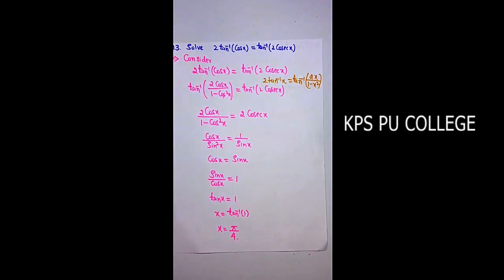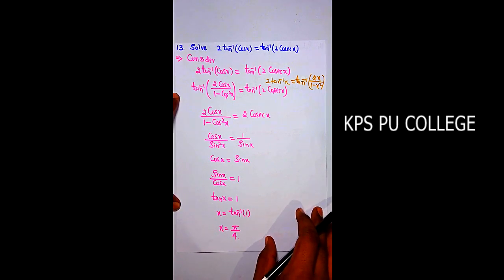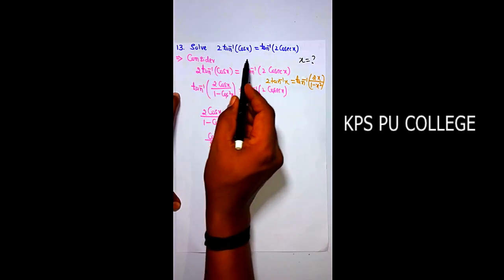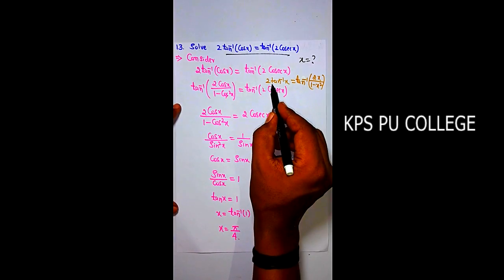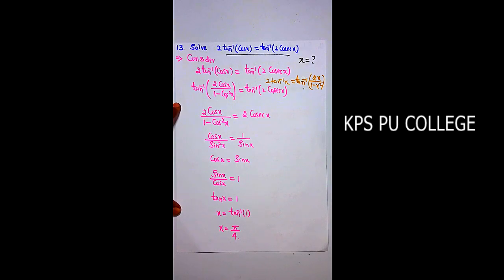Question 13: Solve 2tan⁻¹(cosx) = tan⁻¹(2cosecx). We need to find the values of x.